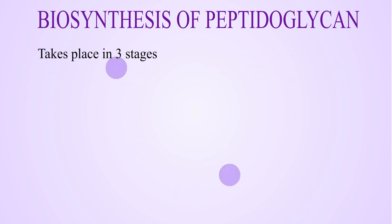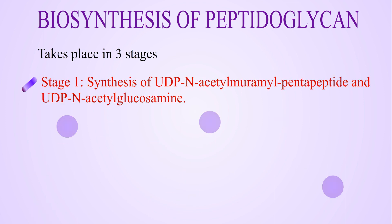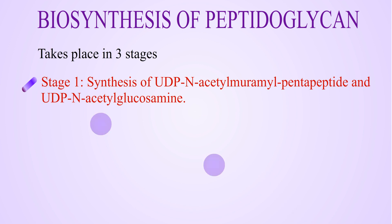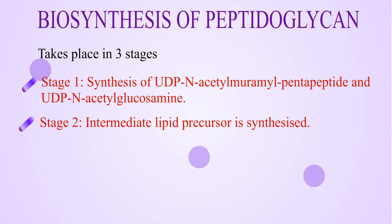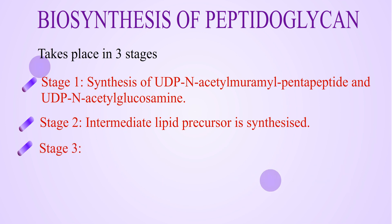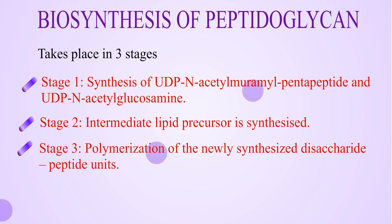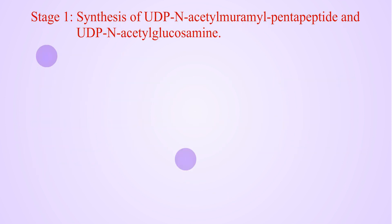The biosynthesis of peptidoglycan is done in three steps. Stage 1: Synthesis of UDP-N-acetyl-muramylpentapeptide and UDP-N-acetylglucosamine. Stage 2: An intermediate lipid precursor is synthesized. Stage 3: Polymerization of the newly synthesized disaccharide peptide units.